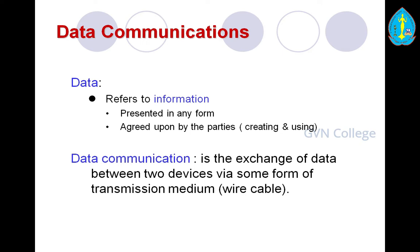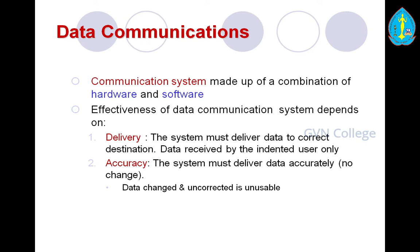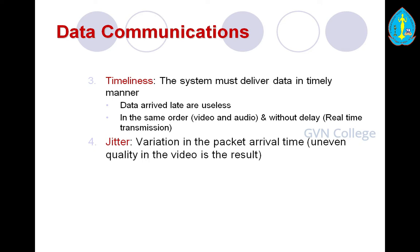A communication system is made of a combination of hardware and software. The effectiveness of a data communication system depends on four factors: delivery, accuracy, timeliness, and jitter. These are the basic factors that cover the effectiveness of data communication.